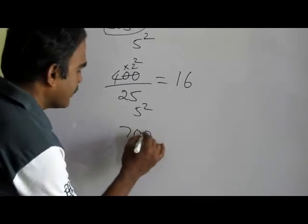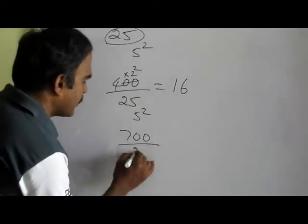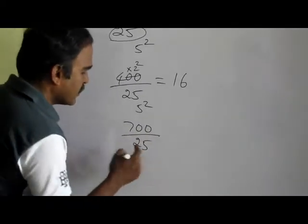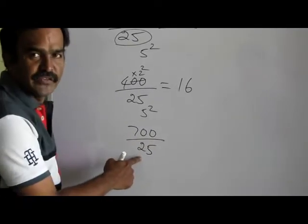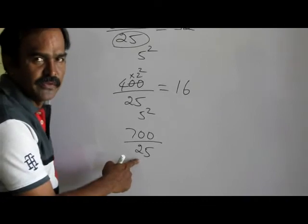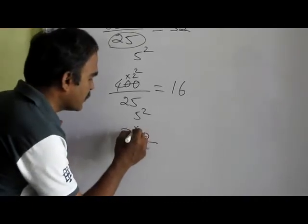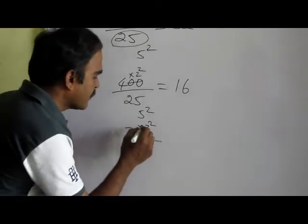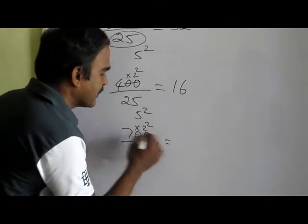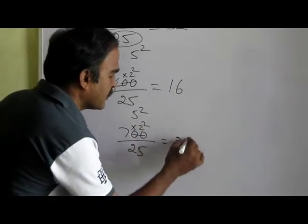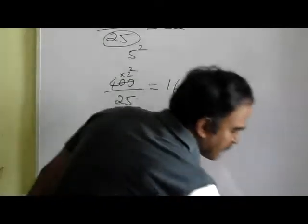What is 700 divided by 25? 25 is 5 squared, so let us multiply by 2 squared. 7 times 2 squared — that is 7 times 4 — is 28.